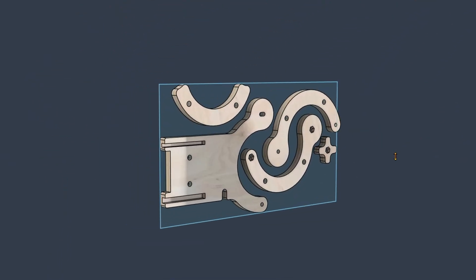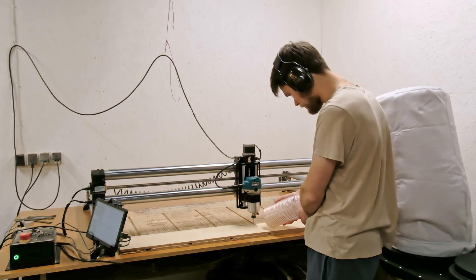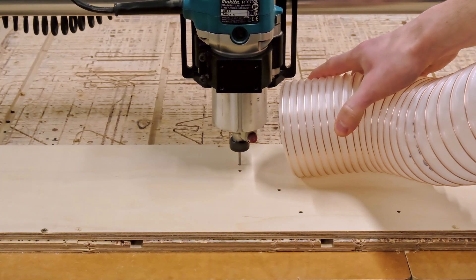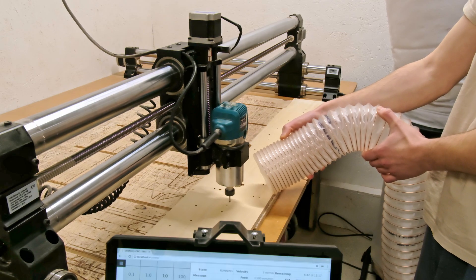Now, we have to make the parts for the dust shoe. So, after loading a 9mm thick plywood offcut on the CNC router, we can start making the components.